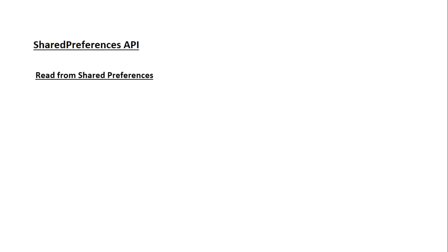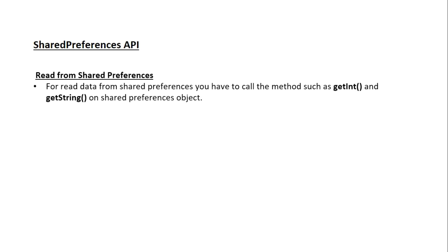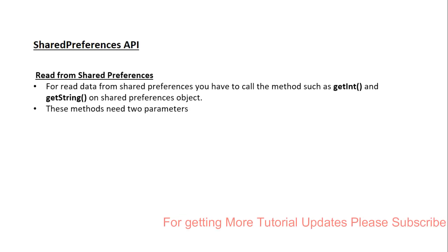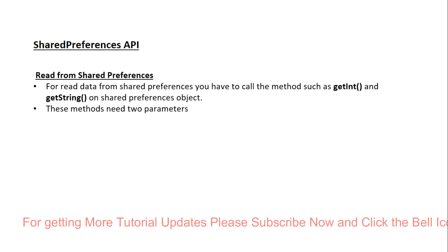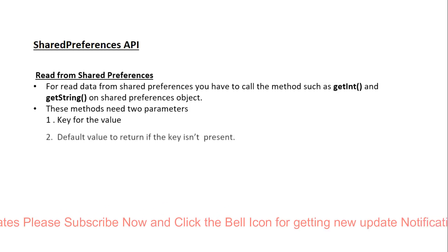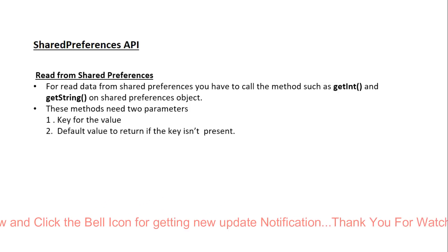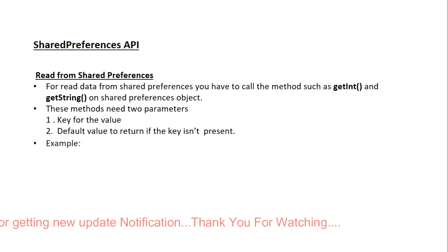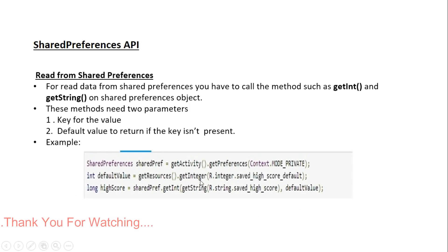Now we can learn about how to read from SharedPreferences. To read data, call methods such as getInt or getString on the SharedPreferences object. These methods need two parameters: the key for the value, and a default value to return if the key is not present. In the example, first get an object of SharedPreferences. The default value is retrieved from strings.xml. When calling getInt on the SharedPreferences object, if the key is not found it returns the default value.